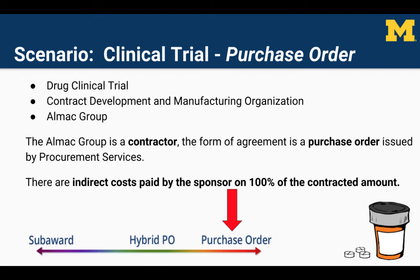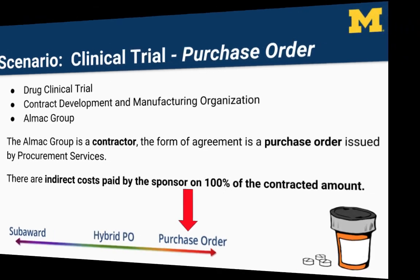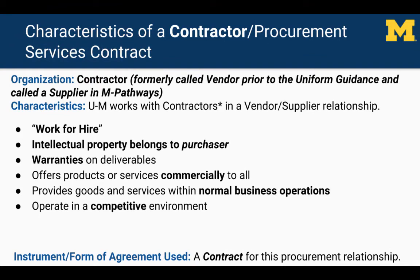In our multi-center clinical trial example, let's say the University of Michigan Pharmacy is unable to provide support services related to drug distribution. ALMAC Group is one of many contract development and manufacturing organizations in the pharmaceutical industry. The University of Michigan enters into a contract with ALMAC Group to provide both the study drug and placebo, as well as code and track the drug shipments. The ALMAC Group is a contractor. The form of agreement is a purchase order issued by procurement services, with indirect costs paid by the sponsor on 100% of the contracted amount. ALMAC Group is a contractor because it provides goods and services within normal business operations, to many different purchasers, operates in a competitive environment, and provides goods and services that are ancillary to the operation of the federal program.